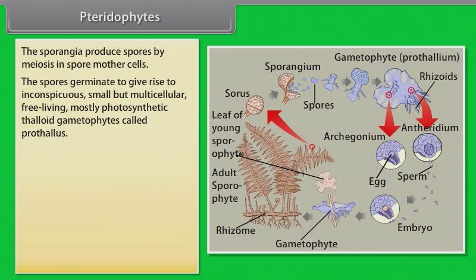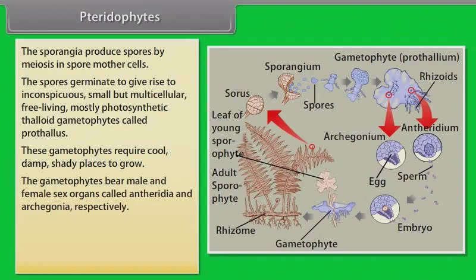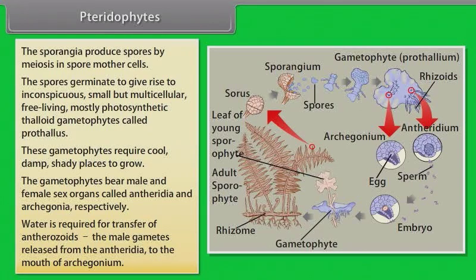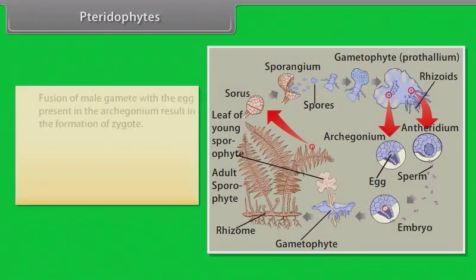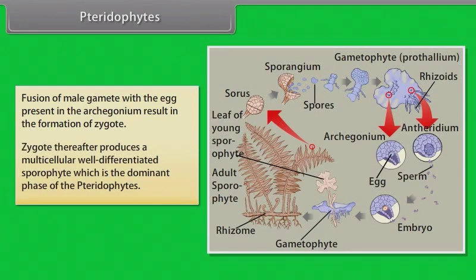The spores germinate to give rise to inconspicuous, small, but multicellular, free-living, mostly photosynthetic thalloid gametophytes called prothallus. These gametophytes require cool, damp, shady places to grow. The gametophytes bear male and female sex organs called antheridia and archegonia, respectively. Water is required for transfer of antherozoids. The male gametes released from the antheridia to the mouth of archegonium. Fusion of male gamete with the egg present in the archegonium result in the formation of zygote. Zygote thereafter produces a multicellular well-differentiated sporophyte, which is the dominant phase of the pteridophytes.